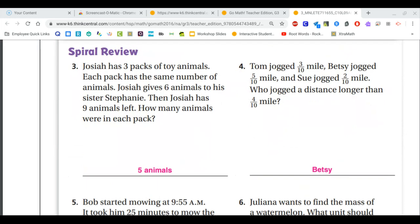For number three, we have to work backwards and opposite on this. Josiah has three packs of animals. He gives six animals to his sister, but then he has nine left. So we start at the bottom, work backwards and opposite. So nine instead of minus six, we're going to add six to make 15.